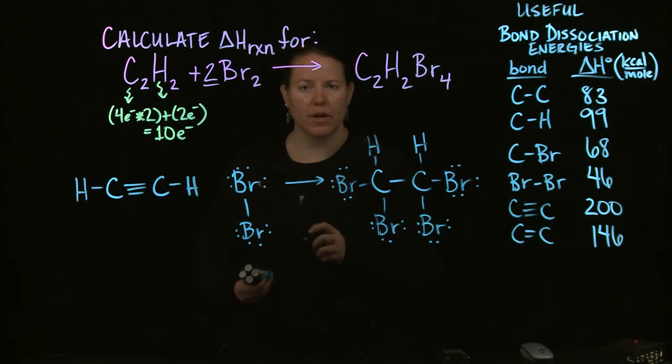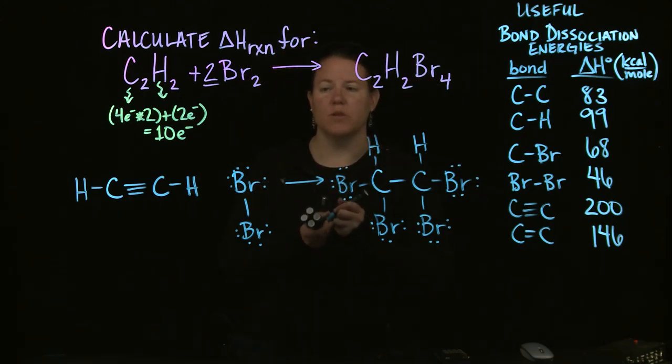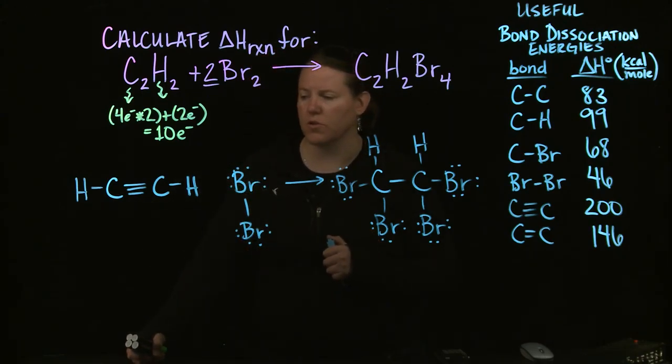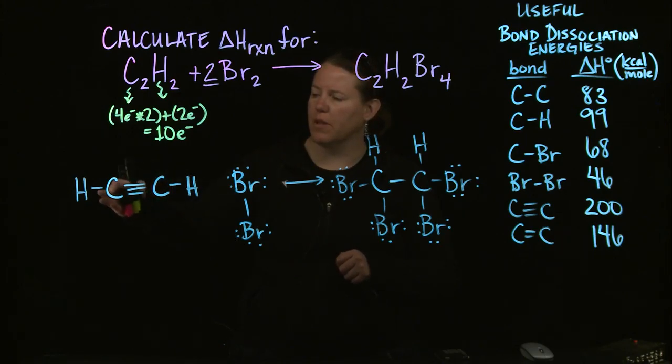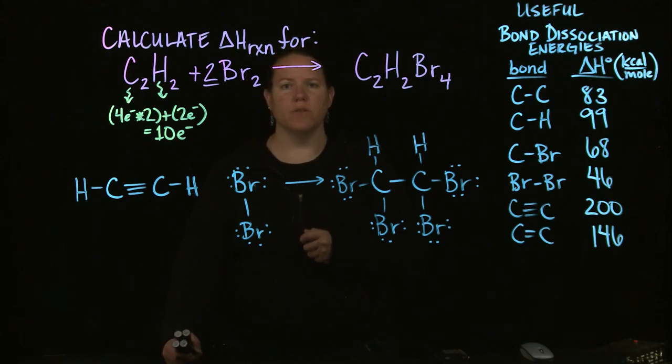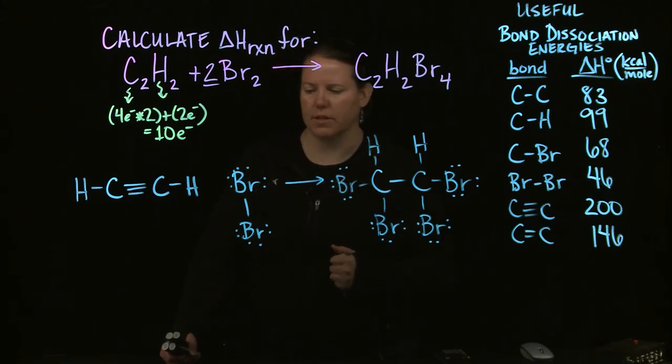Again, you could have started by counting up the total number of valence electrons and making sure in the end you have the same number of valence electrons in your structure. So if we had ten valence electrons here to begin with, I should have two, four, six, eight, ten valence electrons in the end. And what you're recognizing there, in addition to everything else I've been talking about, is that each of those lines contains two valence electrons.